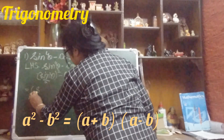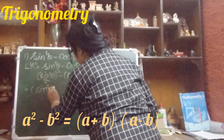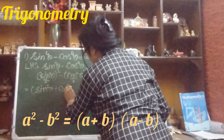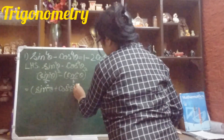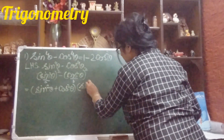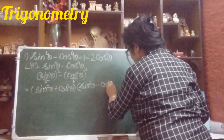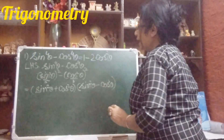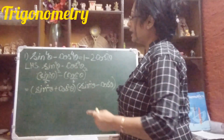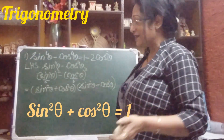So sin²θ is our a. Therefore a plus b means sin²θ plus cos²θ, and a minus b means sin²θ minus cos²θ. This way we have broken it up as (sin²θ + cos²θ)(sin²θ − cos²θ). Now you know the identity: sin²θ plus cos²θ equals 1.